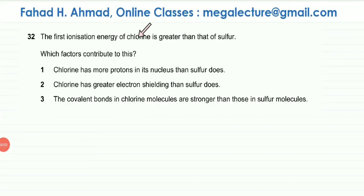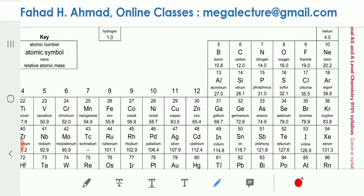The following question reads that the first ionization energy of chlorine is greater than that of sulfur. Which factors contribute to this? Now the first thing I need to look at is the position of the atoms in the periodic table. So chlorine is over here and sulfur is over here.